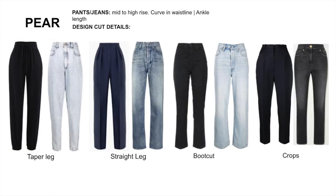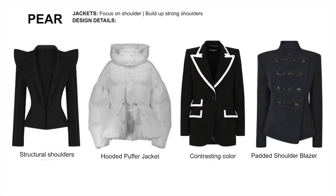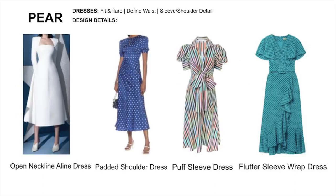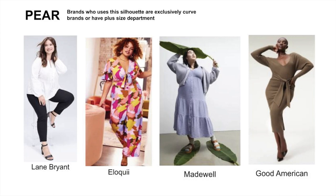For pants and jeans, go with mid to high rise — make sure the waist is curvy with room for hips and bottom, and be mindful of the inseam. For jackets, find cuts to add volume to the top or details to draw attention upwards. For coats, go with an A-line shape or upper body detail to draw focus up. For dresses, go with fit-and-flare with an open neckline or shoulder detail. Here are some brands that design around this curvy shape.